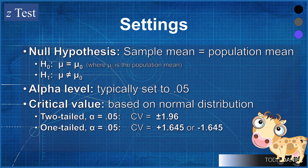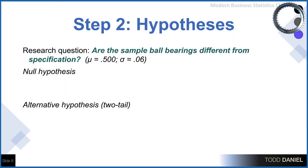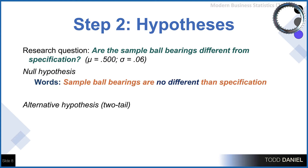If we were doing a one-tailed test, then at 0.05 our critical value would be either positive 1.645 or negative 1.645, depending on the direction of change we were looking for. Knowing the typical settings, let's use those for step two, where we establish our null and alternative hypotheses. Our research question asks whether the sample ball bearings are different from specification. For our null hypothesis, we would write: sample ball bearings are no different than specification, and in symbols H₀: μ = 0.500.